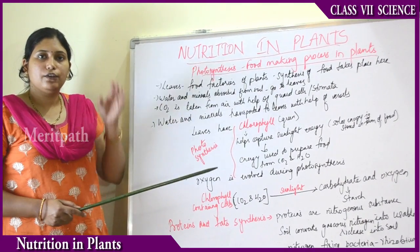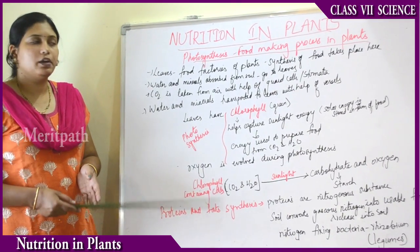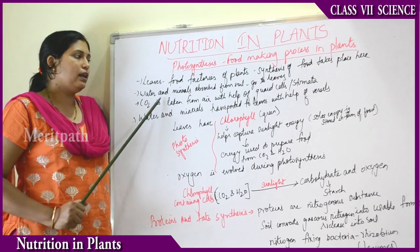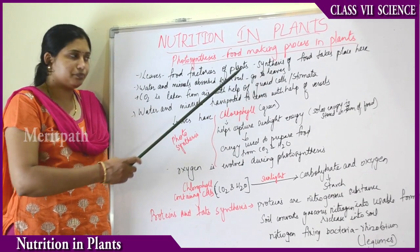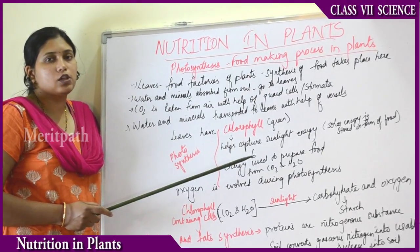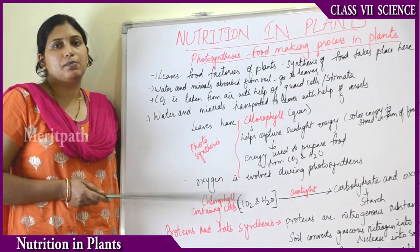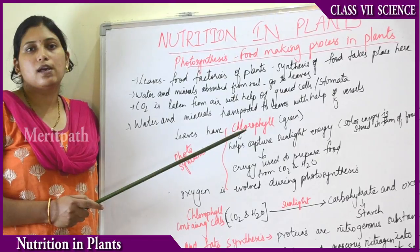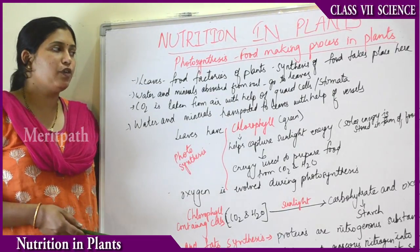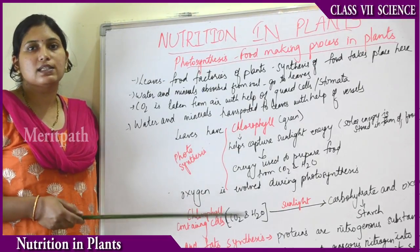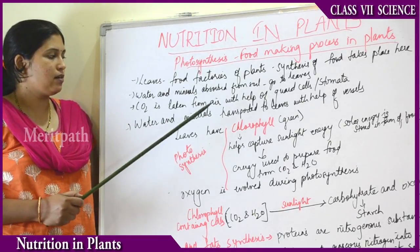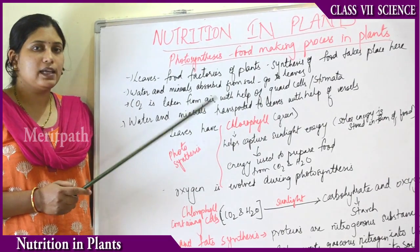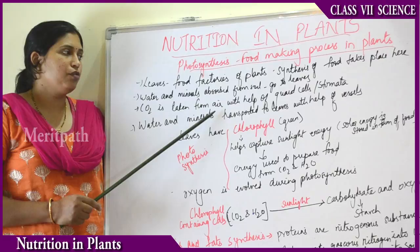Sunlight is obtained from the atmosphere. Water comes from irrigating the plant, and water also supplies minerals to the soil. These minerals are absorbed by water in the soil and transported to the leaves. Water is absorbed from the soil and transported to the leaves and other parts of the plant through vessel-like structures known as xylem and phloem, which will be dealt with in further classes. Water and minerals are absorbed from the soil and transported to the leaves through these vessel-like structures.